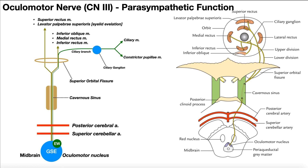Fortunately, the first part of this pathway is actually identical to what we see for the somatic part of the oculomotor nerve. The only part that's going to differ is the exact origin, and also what happens once we get through the superior orbital fissure.